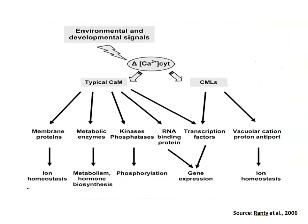To repeat this cascade with the help of a diagram: in response to environmental and developmental signals or stimuli, a transient elevation of calcium ions can be observed in the cytosol as well as other cellular compartments. These calcium ion variations can be decoded by a wide range of calcium ion sensors, such as typical Calmodulin sensors and Calmodulin-like proteins.